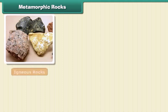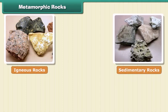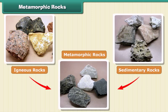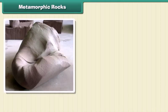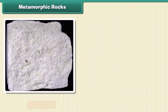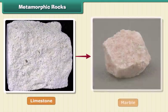The third type of rock is made out of the first two types. These are metamorphic, or changed, rocks. Igneous and sedimentary rocks can change into metamorphic rocks under great heat and pressure. For example, clay changes into slate and limestone into marble.